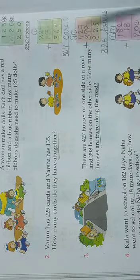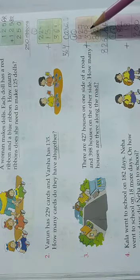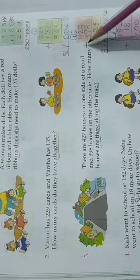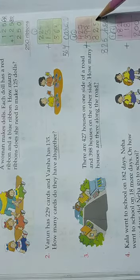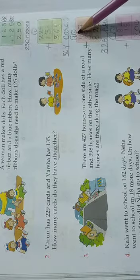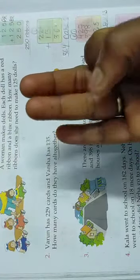See this is a road which has two sides. So one side has 427 houses and the other side has 398. How many houses are there along the road? So 427 are there on one side and 398 are there on the other side and we're just going to add these two. 7 plus 8 is 15, 5 and 1 will be carried over.